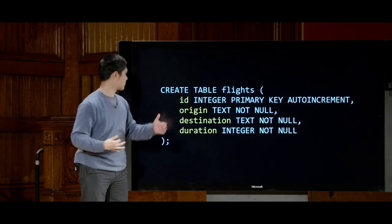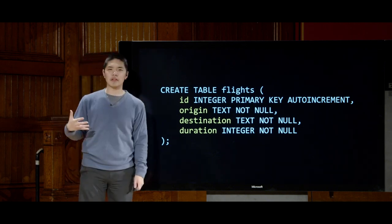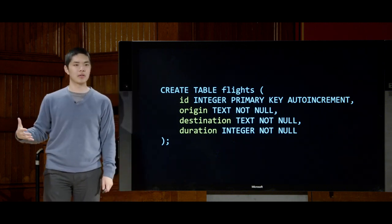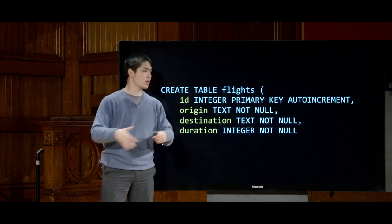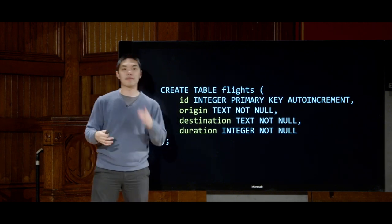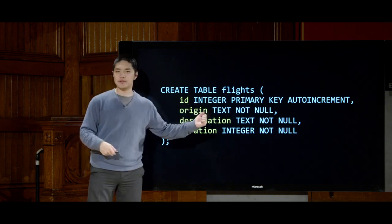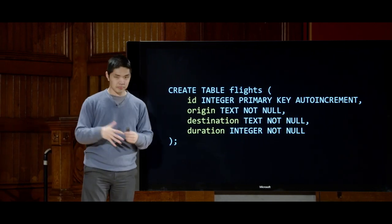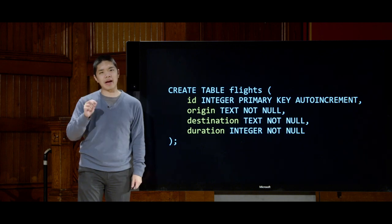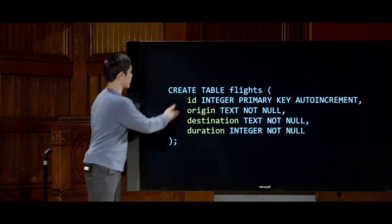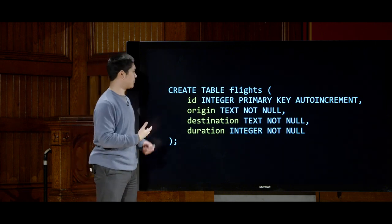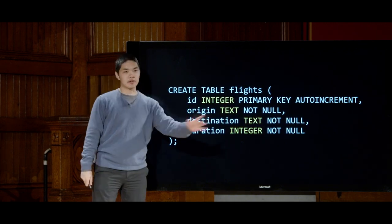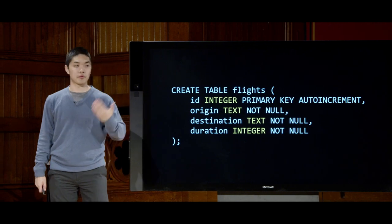Each clause in the column list begins with the name of the column. We have an id column — because in SQL it's helpful to have a way to uniquely reference a particular element, especially if there are multiple flights from New York to London. We give every entry a unique identifier. We also have an origin column, a destination column, and a duration column. Each column has a type: id is an integer, origin and destination are text, and duration is an integer representing minutes.